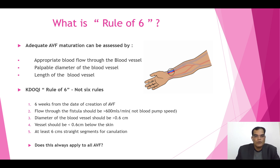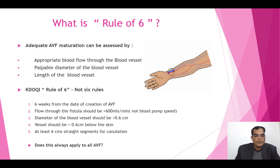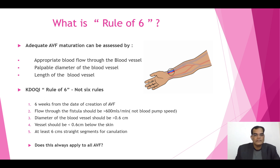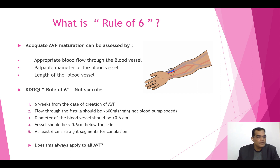We are talking about blood flow through the vessel, not the blood pump speed — it should be more than 600 mls per minute. We also need to assess the diameter of the blood vessel: it should be more than 0.6 centimeters. The vessel should be within 0.6 centimeters below the skin, and we should have a straight segment of at least six centimeters available for cannulation.